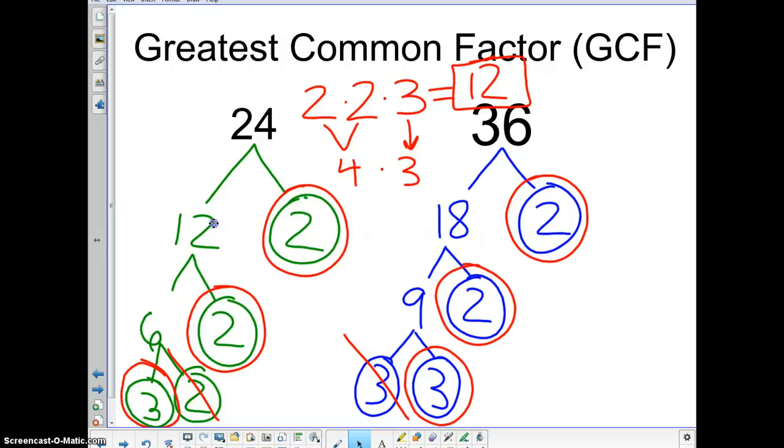So to review what we did, to find the greatest common factor you have to find the prime factorization for both numbers. You have to match up the ones that are in common. In this case there are two 2's and a 3. And then you multiply those common prime factors out. And in this case we get 12.